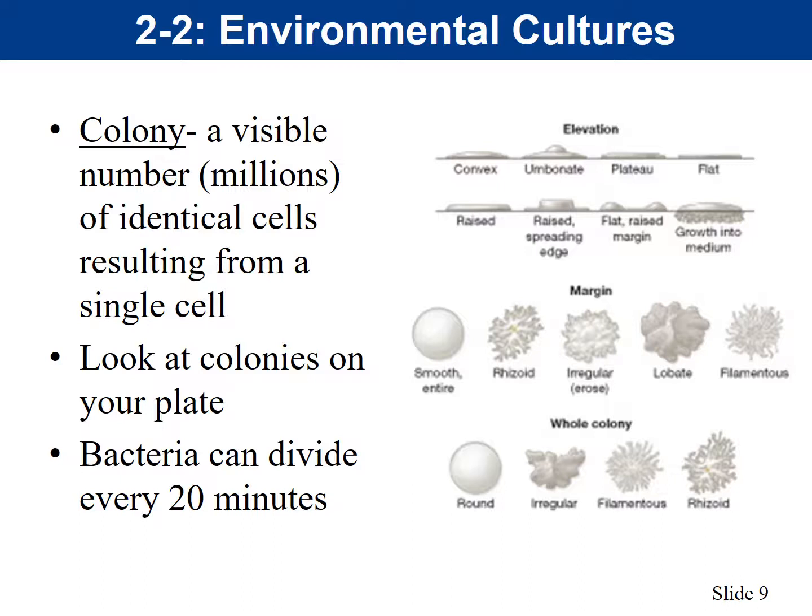Some bacteria can divide every 20 minutes, going from one cell to two, two to four, etc. To get a million bacteria, they only need to grow for about six to seven hours. So those colonies on your plate represent over a million bacteria — a visible mass. You want to look at the types of colonies found on your plate and try to describe what they look like.